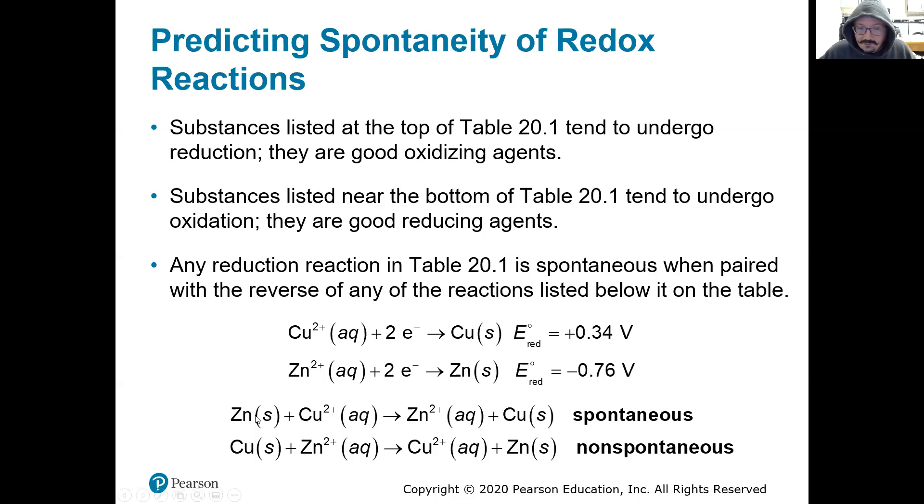Things higher on the table are more likely to be reduced and things lower on the table are more likely to be oxidized. So if I combine two things and one's higher on the table, what I should see is that will be spontaneously reduced and this will be spontaneously oxidized.